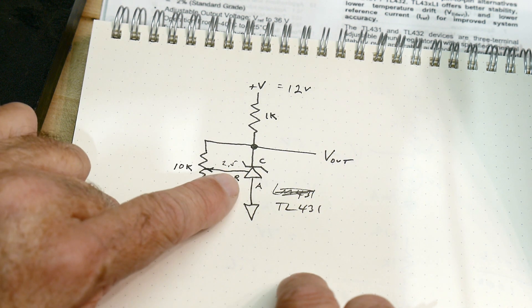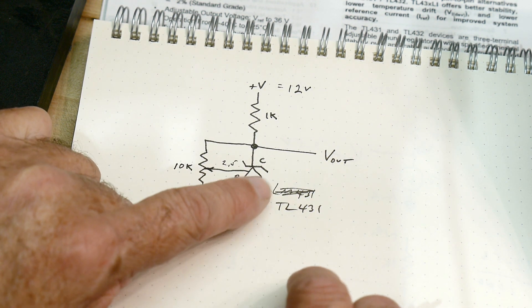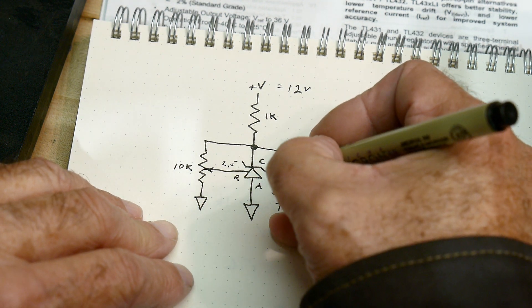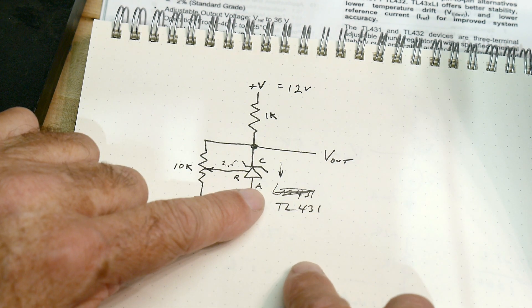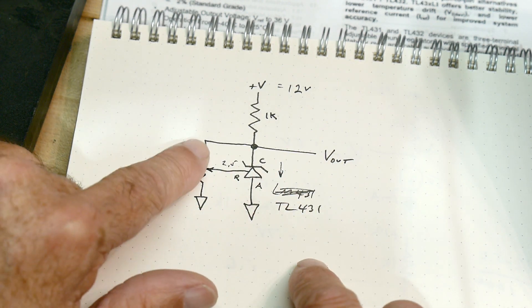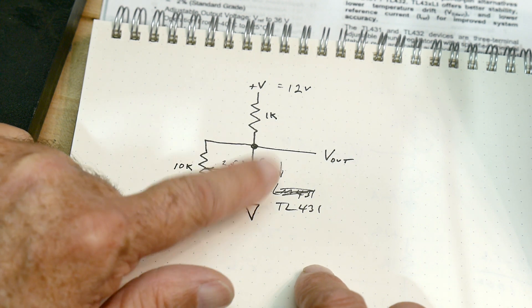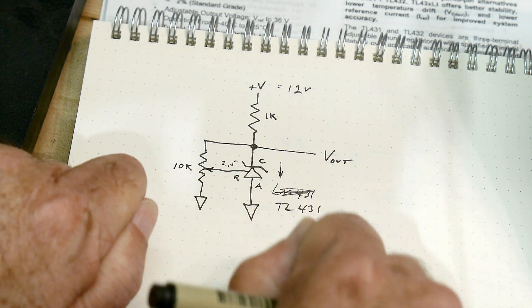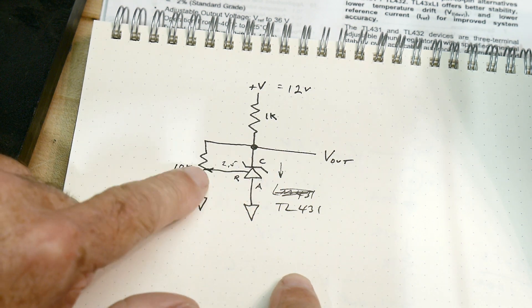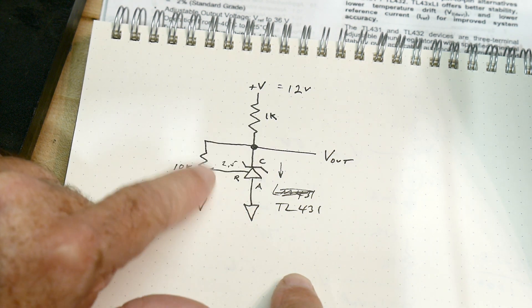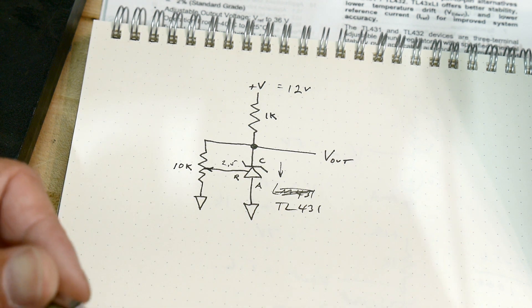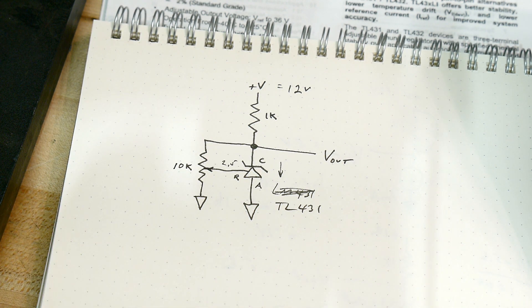The other way to think of this is this device will sink current. It will sink current such that this voltage here will always be 2.5. It'll just start sucking current until it pulls it down hard enough so that you'll get whatever the resistor divider here is to get to 2.5. So let's go ahead and hook this up and see how it works.